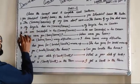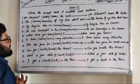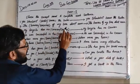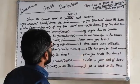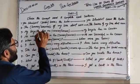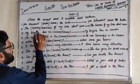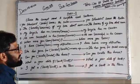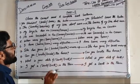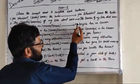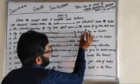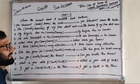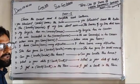Number two: 'The brakes — B-R-A-K-E-S — of my bike don't work.' Here, brakes refers to the bicycle brakes. So the sentence becomes: 'The brakes of my bike don't work' — meaning the brakes of my bicycle are not working.